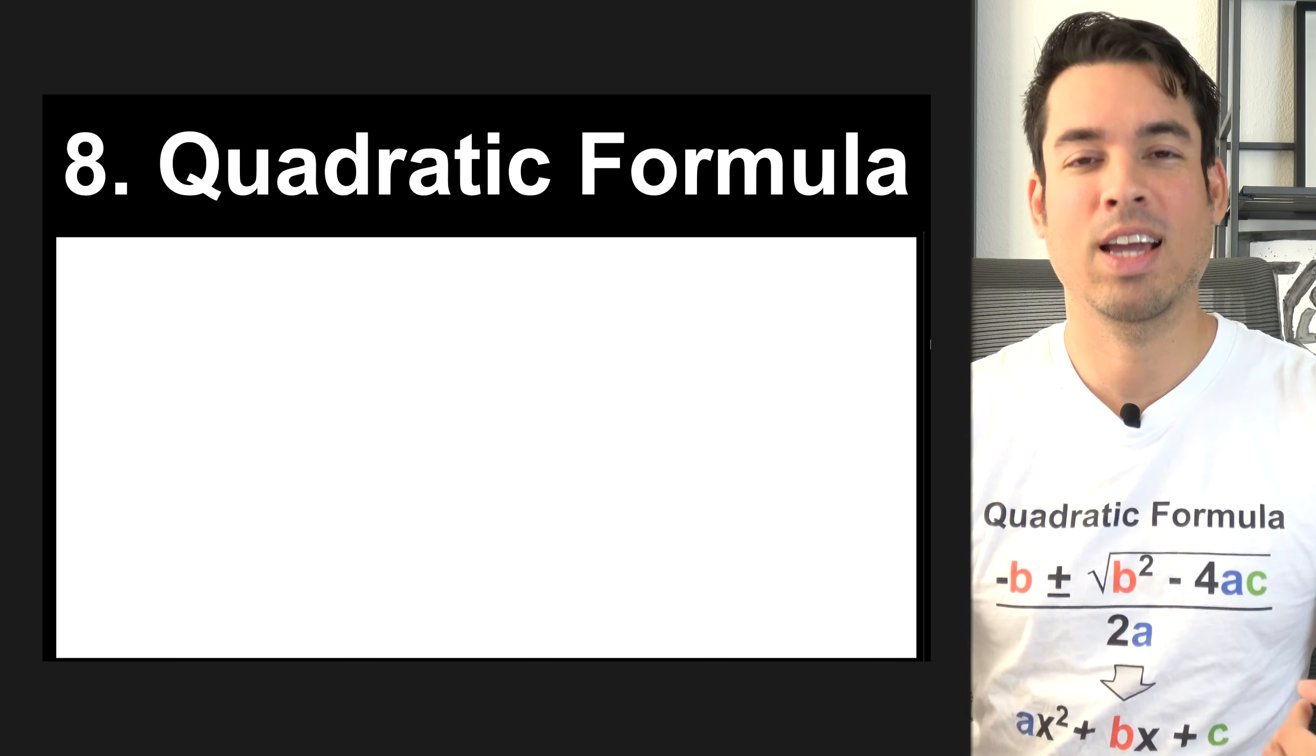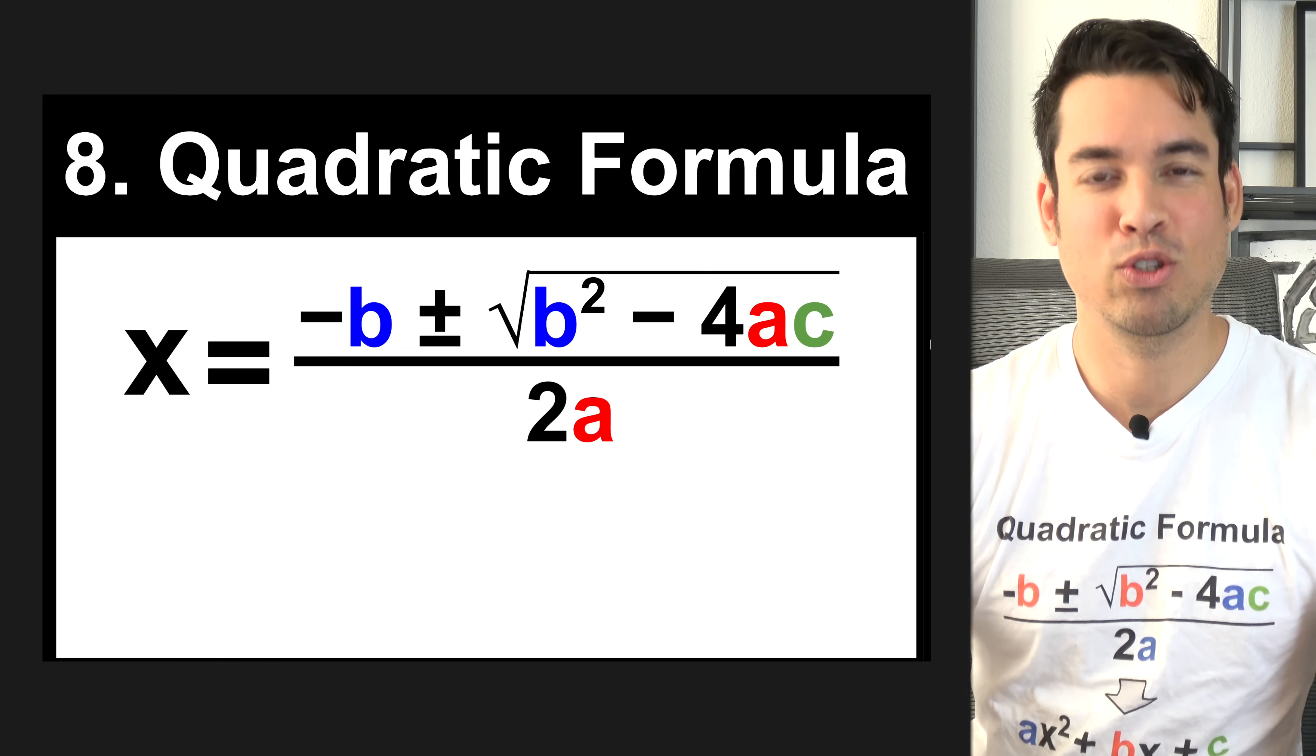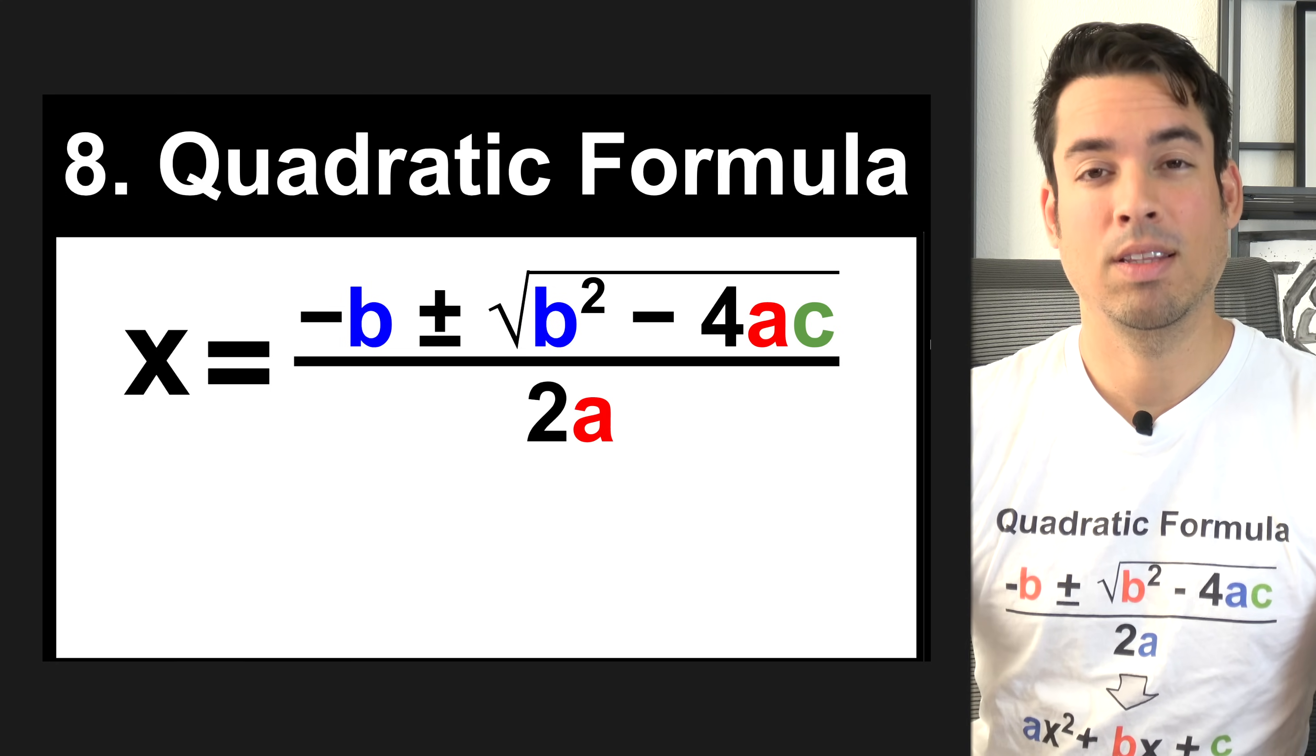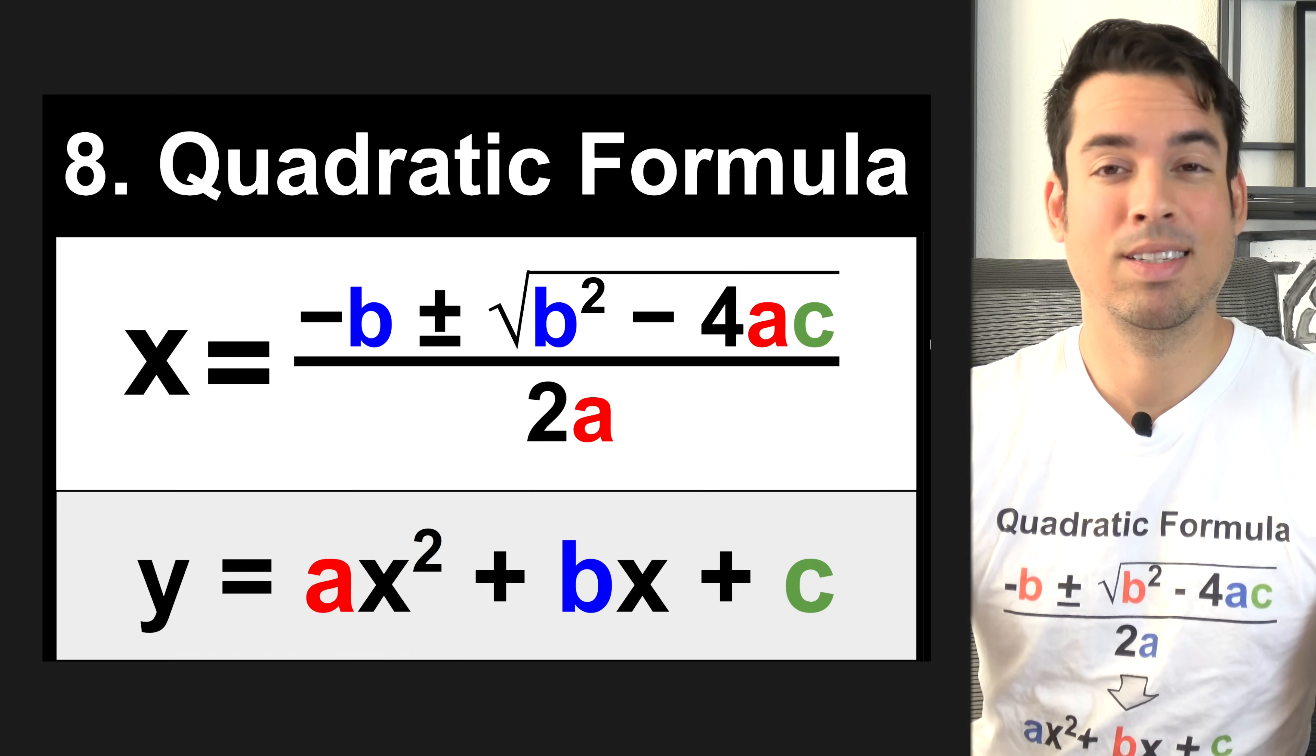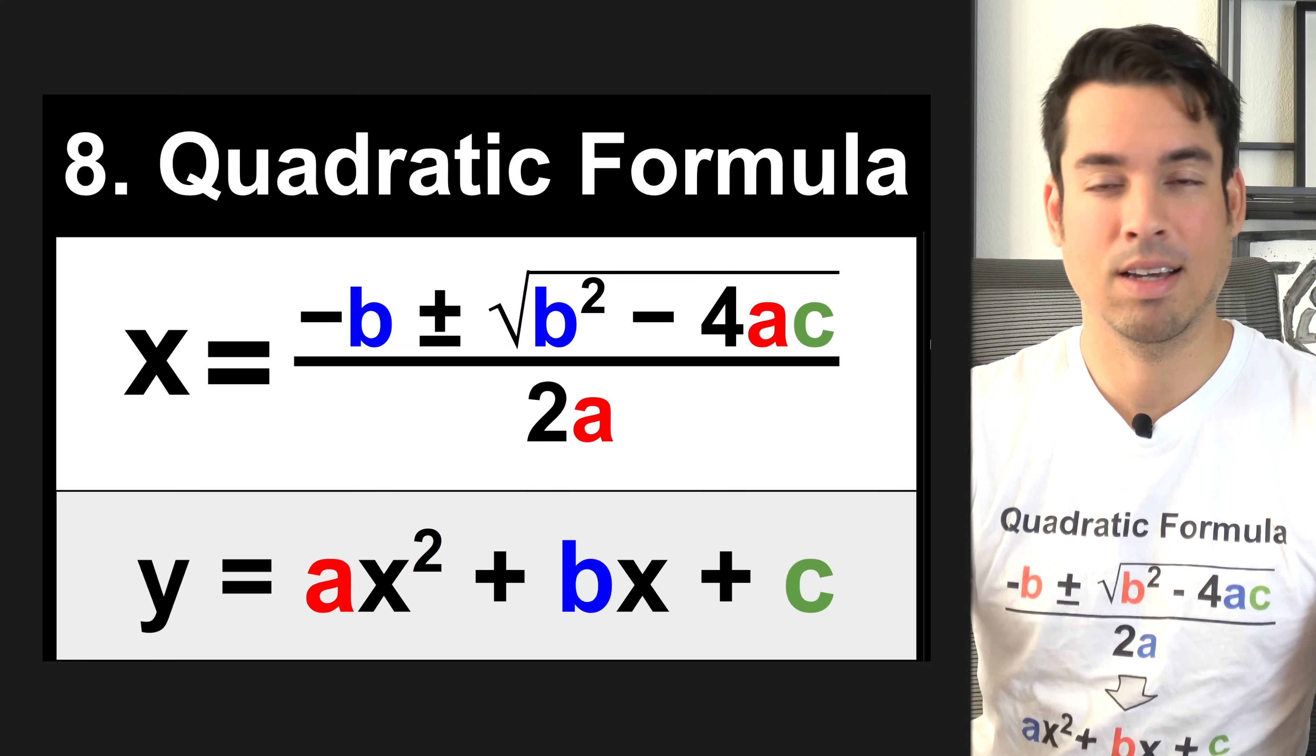Next, we have the quadratic formula, which I have on my shirt. The quadratic formula is negative b plus or minus the square root of b squared minus 4ac all over 2a. This can be used to find the roots of a quadratic, meaning where this quadratic intercepts the x-axis. If you're wondering where a, b, and c come from, they come from the standard form of a quadratic, where a is the coefficient of the x squared, b is the coefficient of the x, and c is the constant.